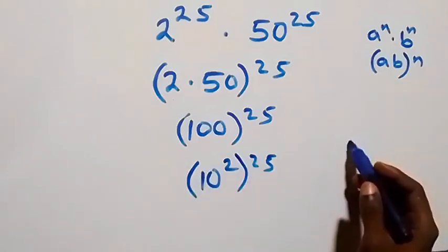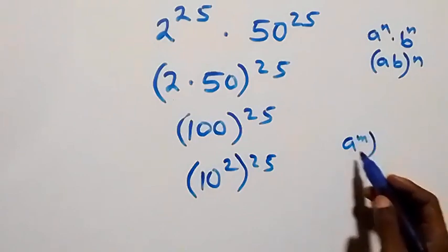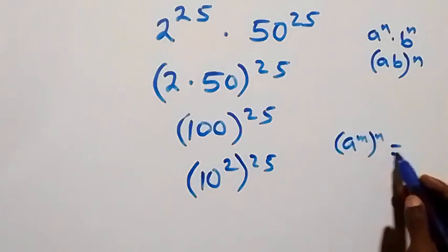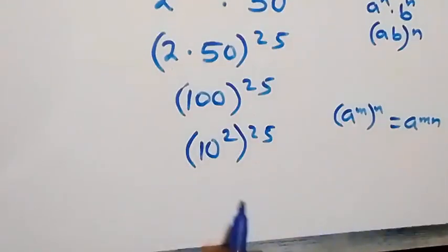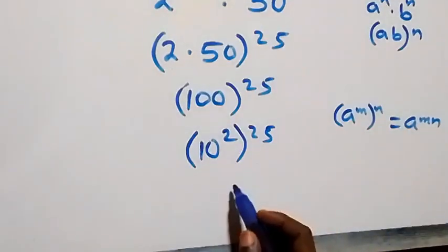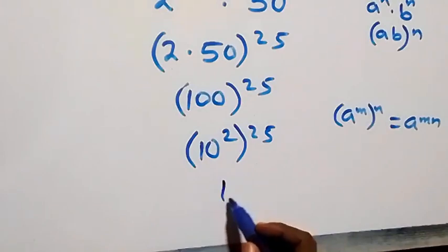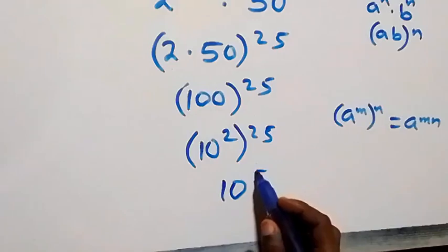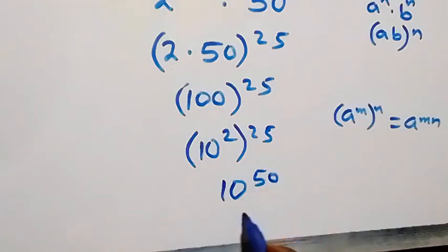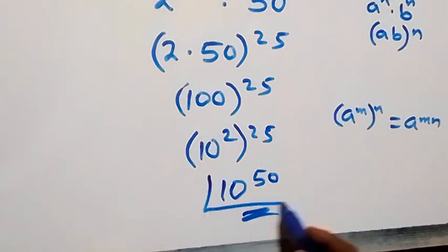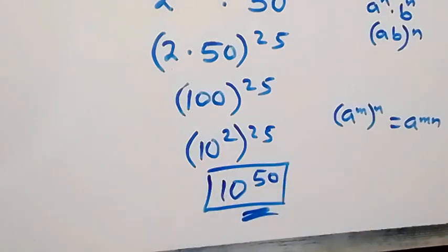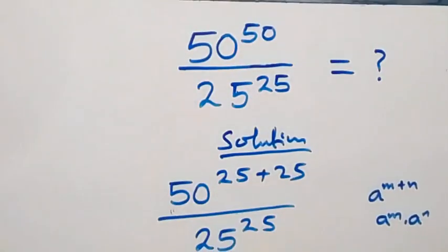From the law of indices, (a raised to power m) raised to power n is the same thing as a raised to power m times n. So this power multiplies and we have 10 raised to power 50. So the simplified answer is 10 raised to power 50. Thank you for watching.